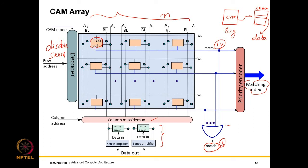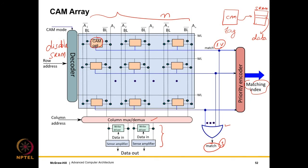SRAMs and CAMs form the basis of modern memory systems. SRAMs are much faster and are used almost everywhere for data arrays. CAM arrays are larger, slower, and more power-hungry, but are used for tag arrays particularly when we have few entries and need a fully associative structure — essentially a hardware hash table. Next, we will discuss the CACTI tool, which is an automatic cache design space exploration tool.